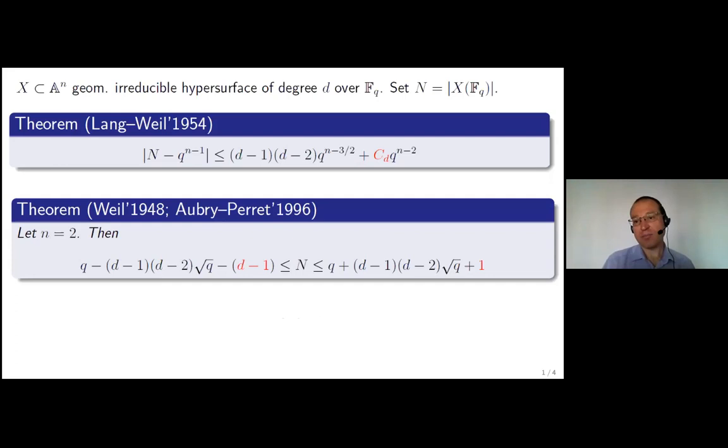Our goal is to study the number of F_Q rational points on X. If X is given by the data of a polynomial with coefficients in F_Q of degree D, we are counting the number of F_Q solutions of the corresponding polynomial equations. Our goal, more specifically, will be to study the dependence of C_D on D.